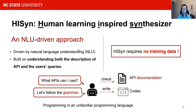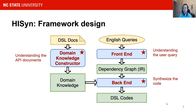Let's take a look at this framework. The framework of HySing includes three components. The domain knowledge constructor is designed to understand the descriptions of APIs and translate them into domain knowledge. It extracts key information in the API description and transforms the grammar into a graph representation. The front-end is designed to understand natural language queries from users and translate the essential information into an intermediate representation. The back-end then synthesizes the code using the information from both the intermediate representation and domain knowledge.